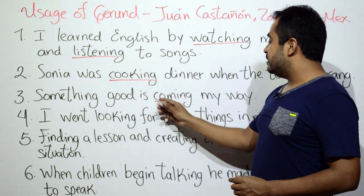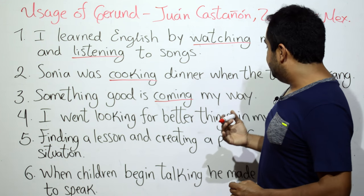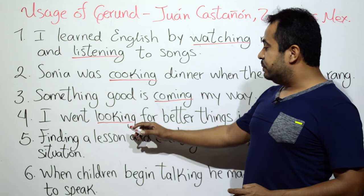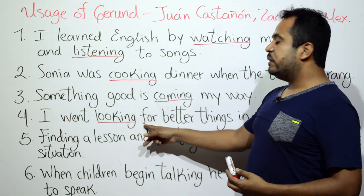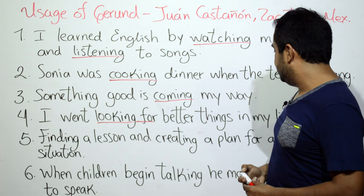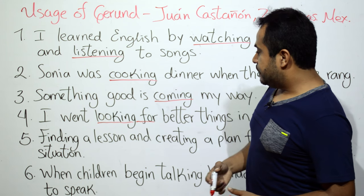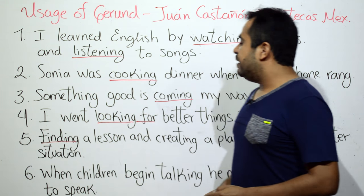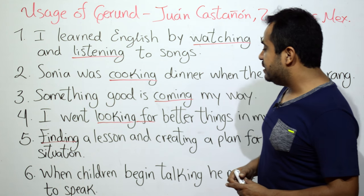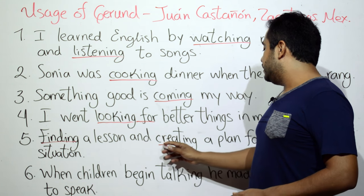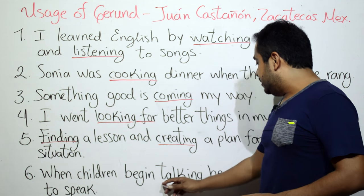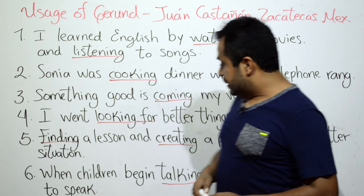Después tenemos 'coming' — esta sí viene del verbo 'come', venir. Después tenemos 'looking', que es mirando, pero cuando le colocamos 'for' es un verbo frazal: 'looking for', buscando. Después tenemos 'finding', que es encontrando. Entonces aquí es buscando, acá encontrando. 'Finding a lesson and creating' — aquí tenemos 'creating', que es creando. Después tenemos 'talking', que es hablando.